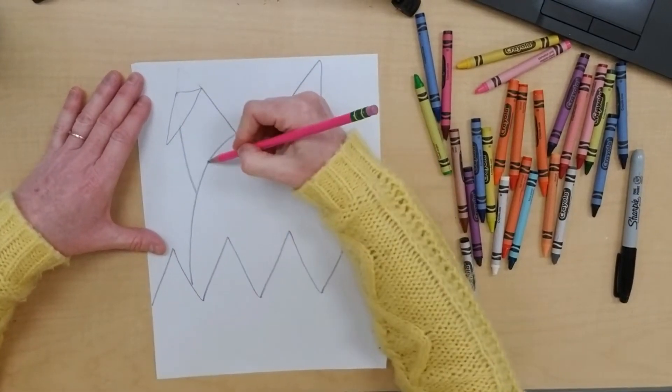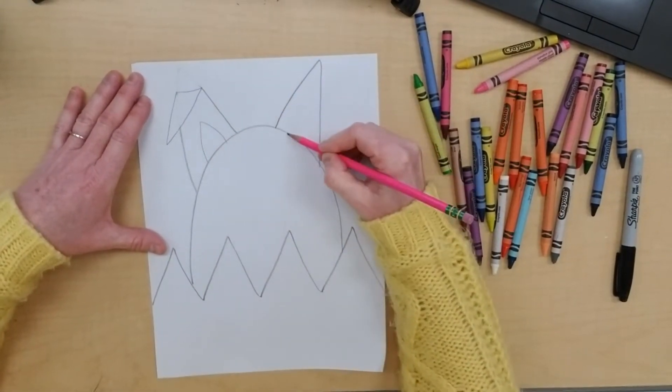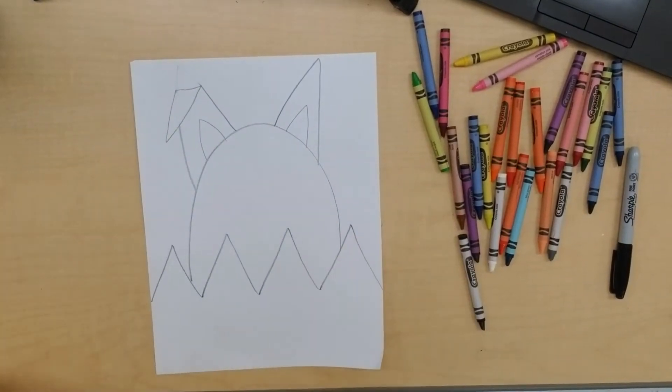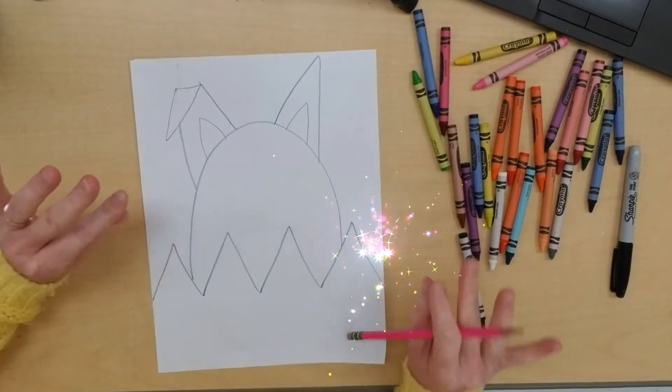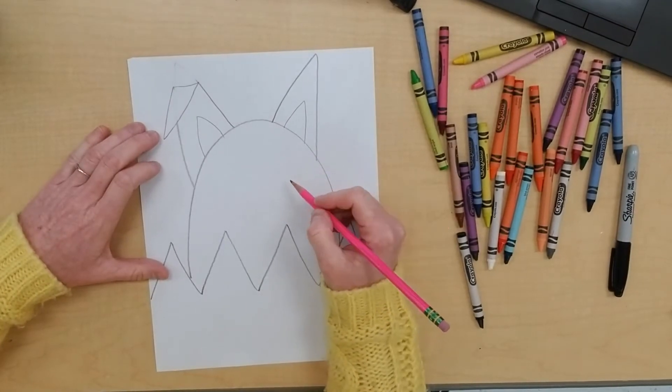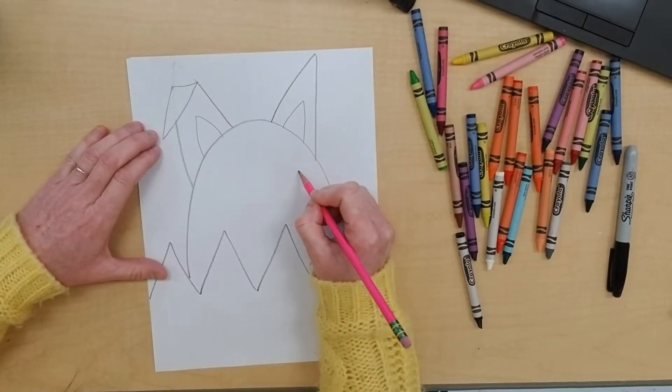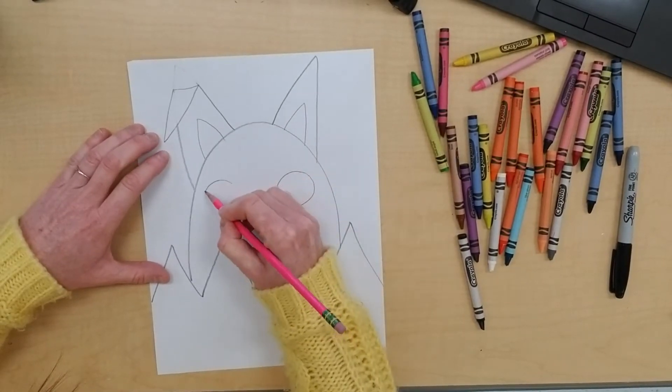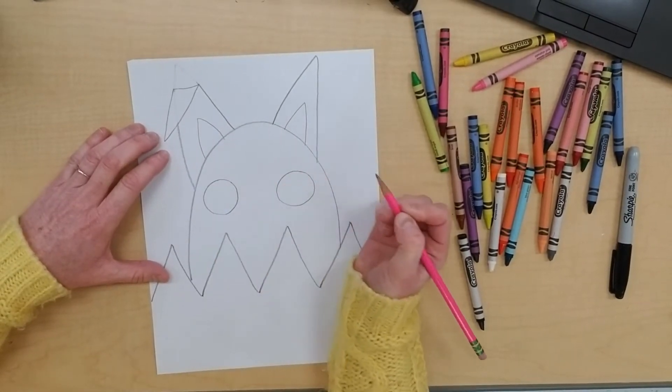And you can add some more triangles inside if you like. Now to make it look kawaii, we have to do the cute kawaii eyes. So I'm going to do two big circles for the eyes, one right about here and one right about here, and we're going to